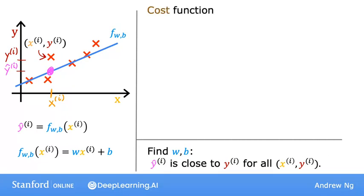The cost function takes the prediction y hat and compares it to the target y by taking y hat minus y. This difference is called the error. We're measuring how far off the prediction is from the target. Next, let's compute the square of this error. Also, we're going to want to compute this term for different training examples i in the training set. So, when measuring the error, for example i, we'll compute this squared error term.